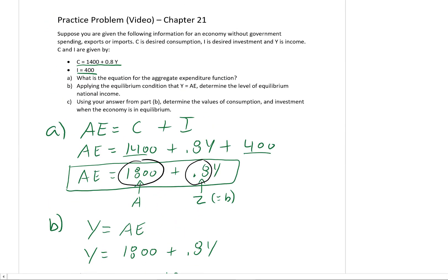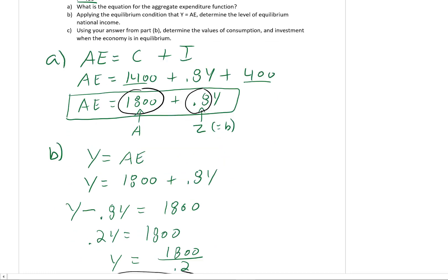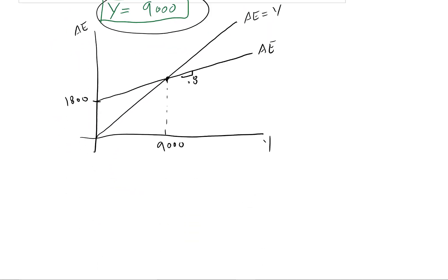So moving on to part C. Let's just scroll up so we can read it. Using your answer to part B, determine the values of consumption and investment when the economy is in equilibrium. It's asking us at Y star, it wants to know what consumption is and what investment is.